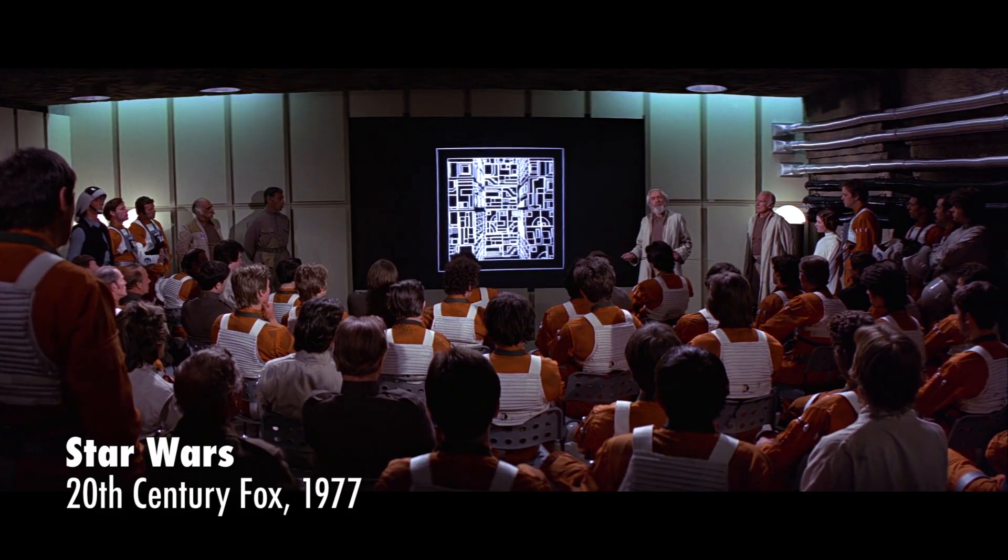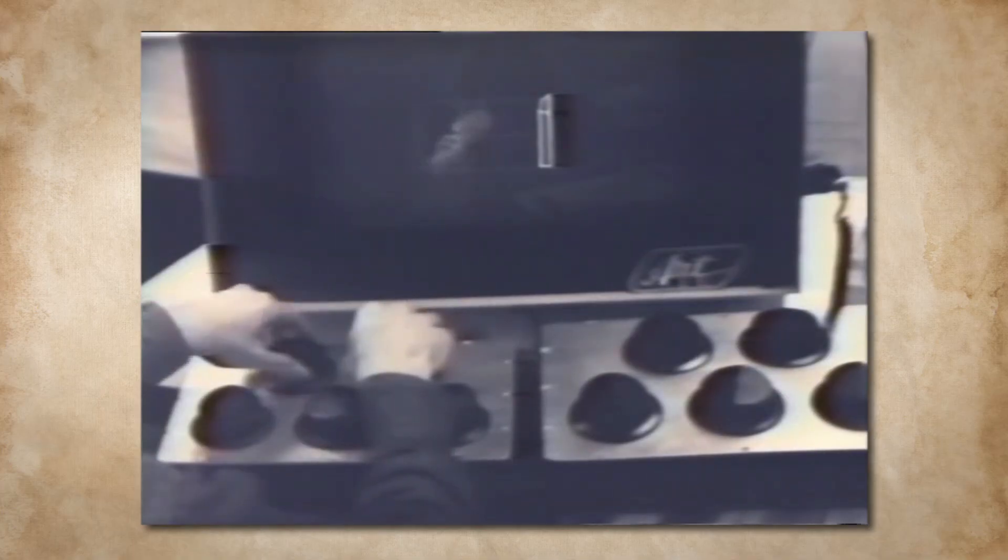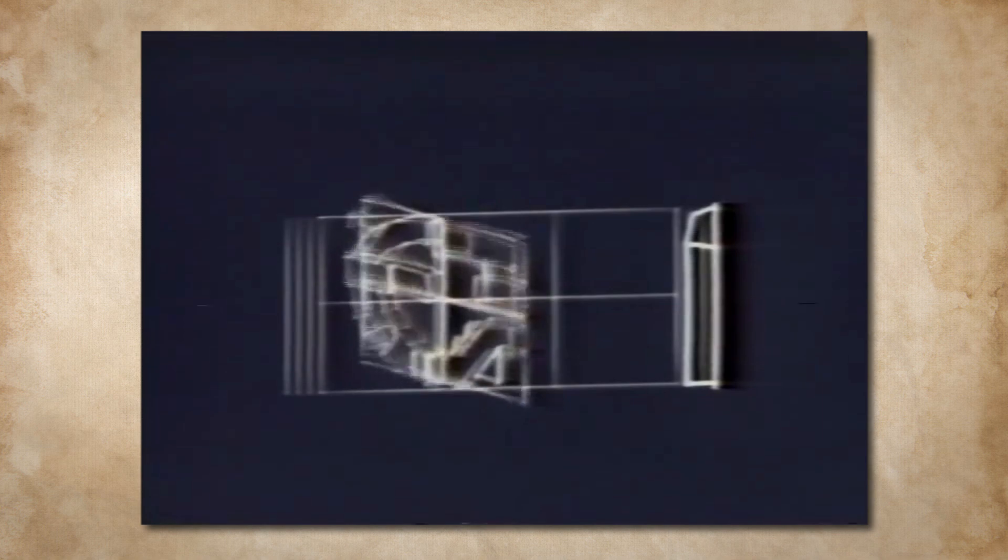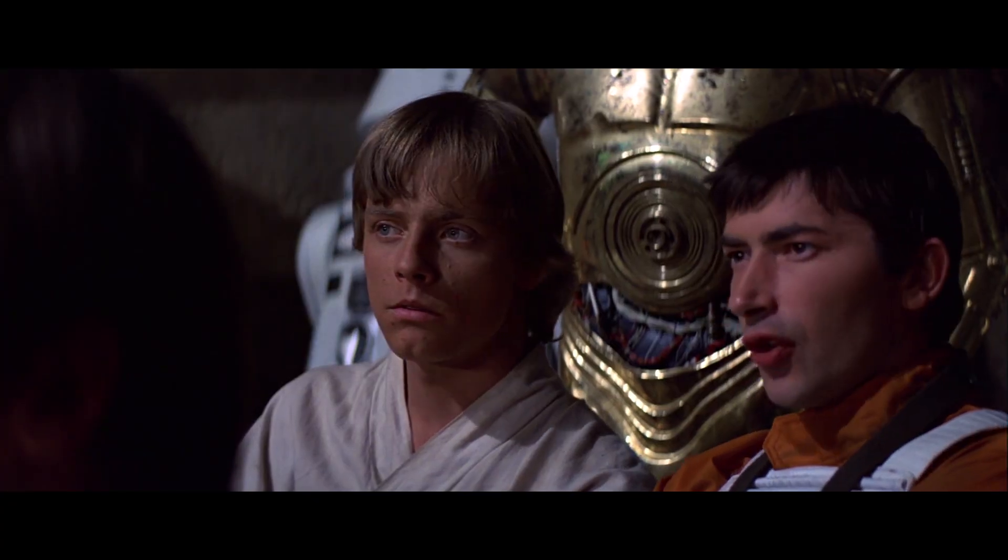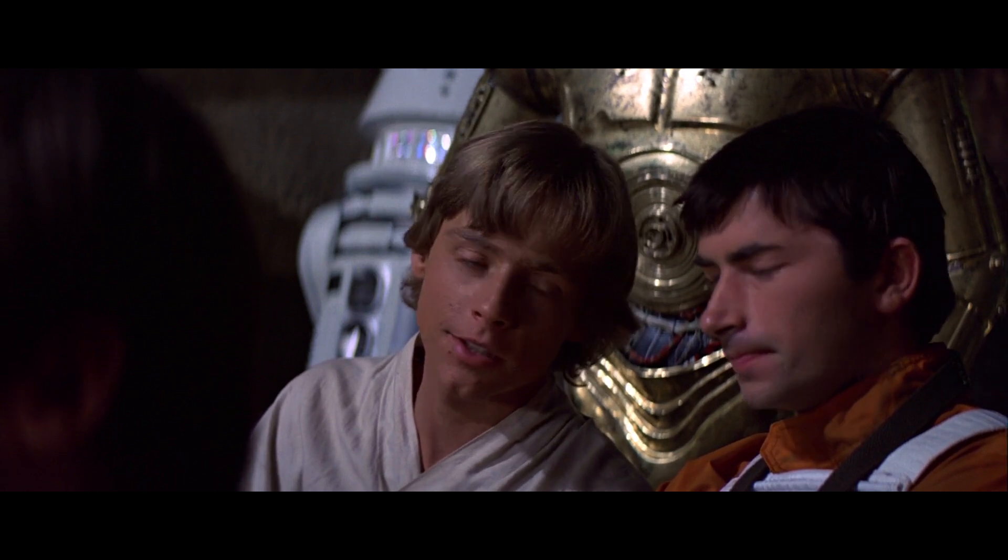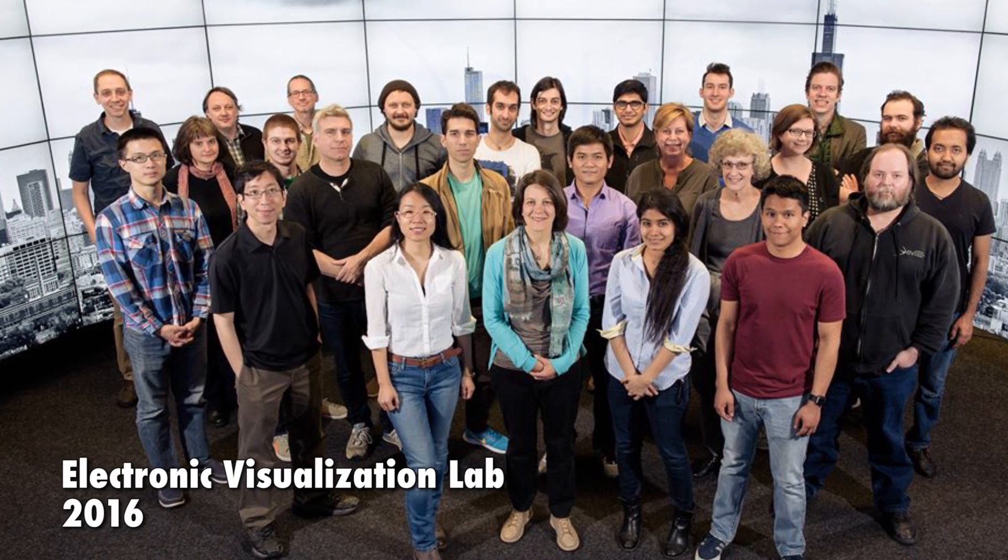Yep, the freakin' Death Star plans that helped Luke defeat the Empire was, at the time, a very sophisticated computer animation created at the Electronic Visualization Laboratory at UIC. That's impossible, even for a computer. But it's not impossible. I used to bullseye womp rats in my T-16 back home. So if anybody can create a real-life holodeck, I'm betting that the guys that designed the Death Star can.